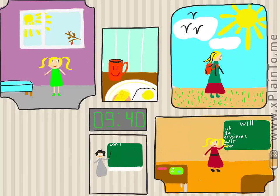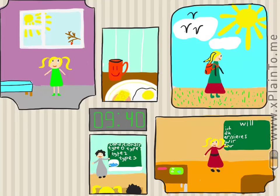Wir schreiben ein Diktat. Dann kontrollieren wir die Hausaufgabe. Zum Schluss lesen wir den Text über den Bankalsee.